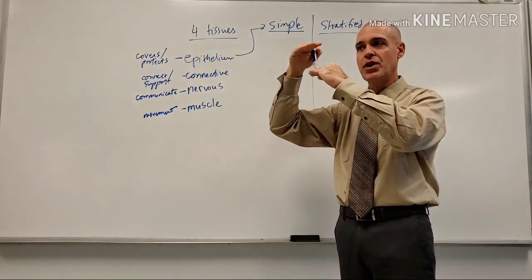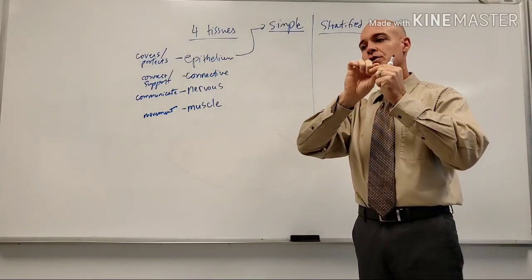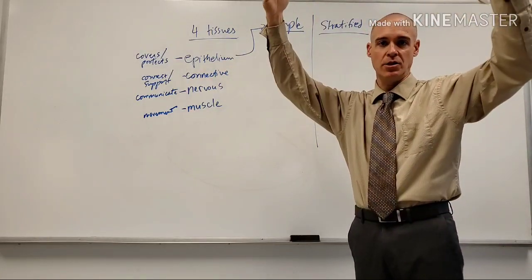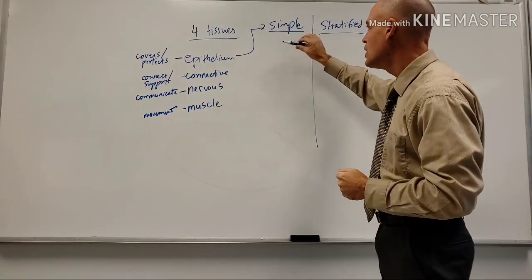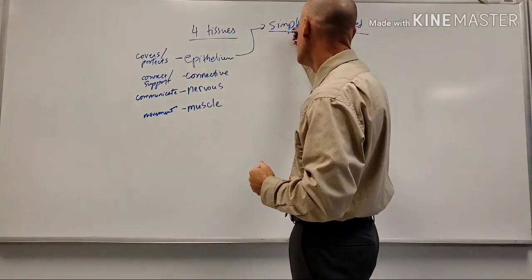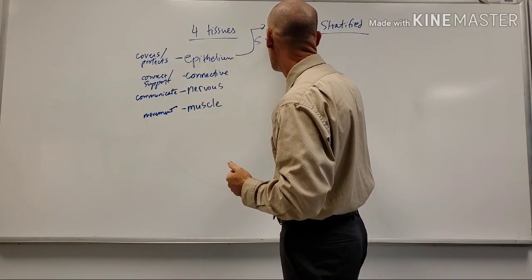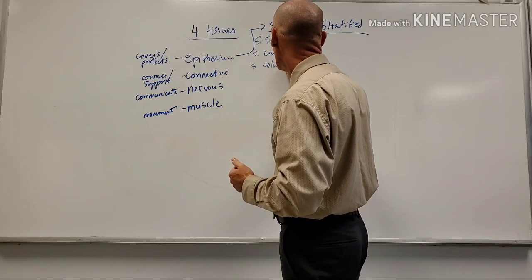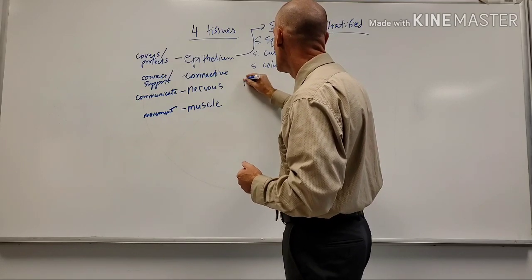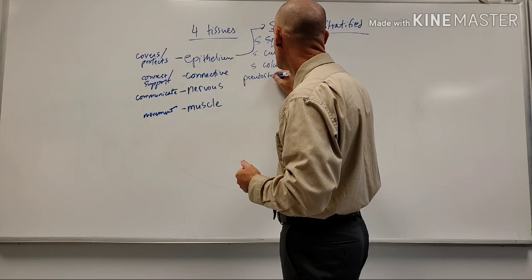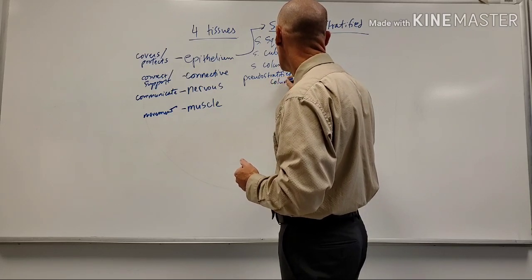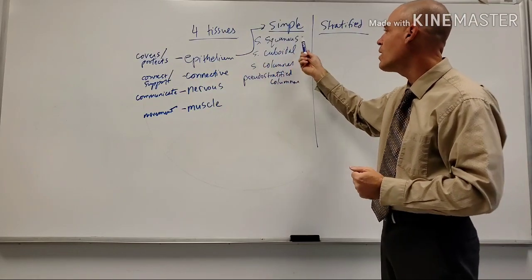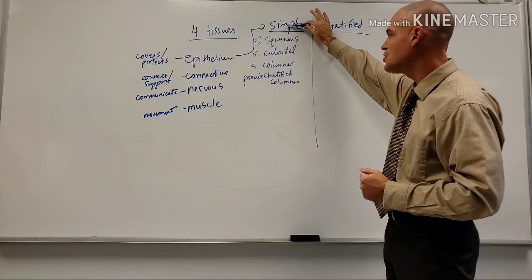In stratified epithelium, the bottom row touches the basement membrane, but the more superficial rows do not. The four simple types are: simple squamous, simple cuboidal, simple columnar, and the unique one - pseudostratified columnar. All of these would end with the word epithelium, and all are a single-row layer of cells.